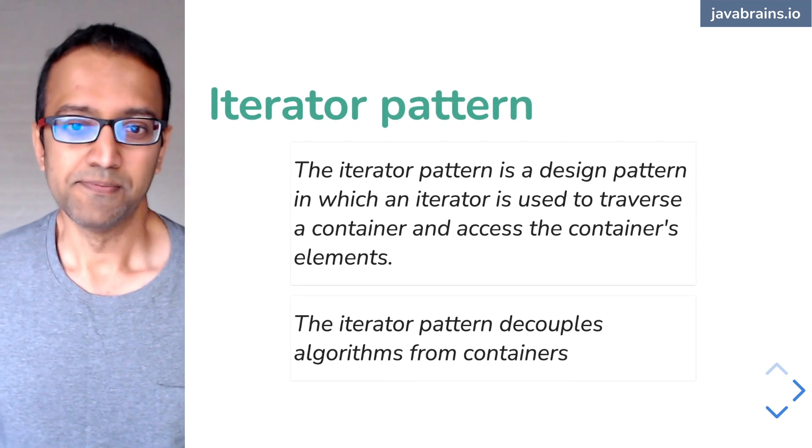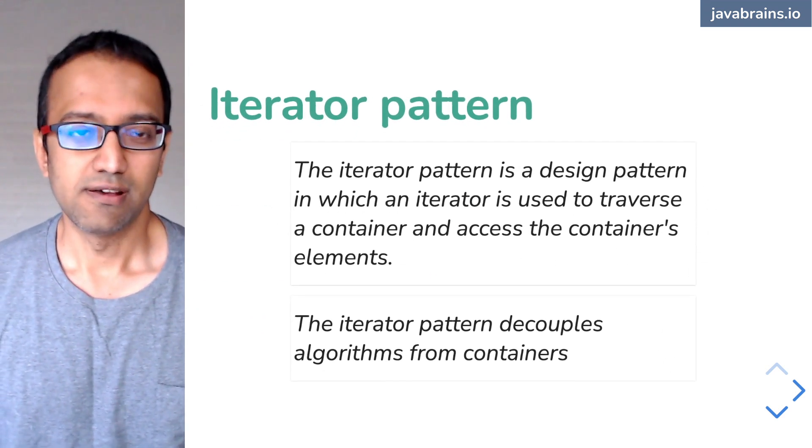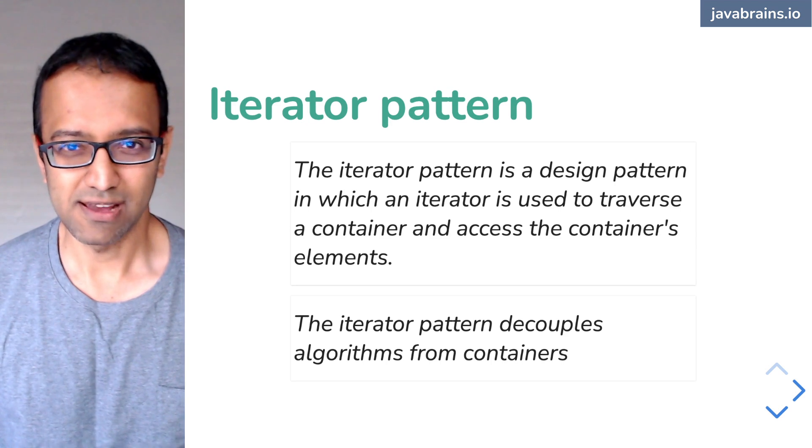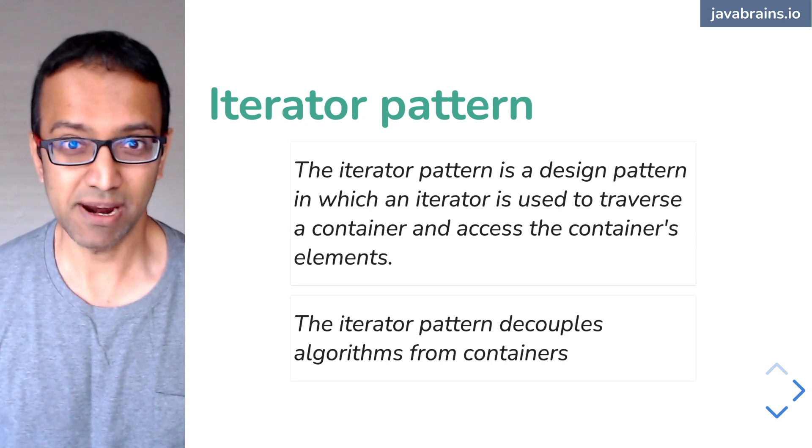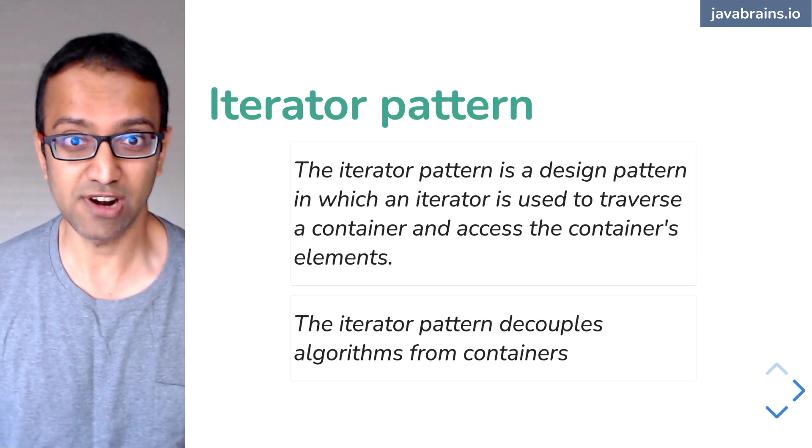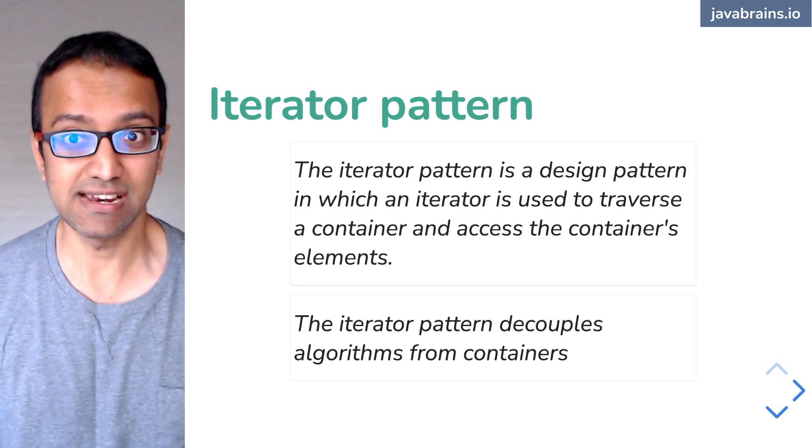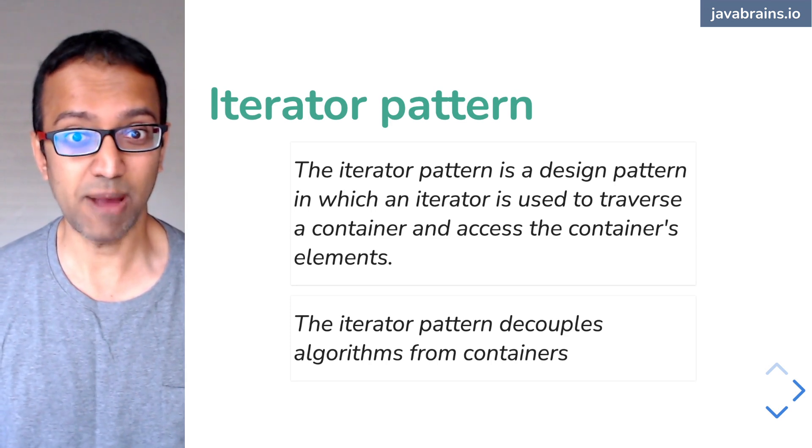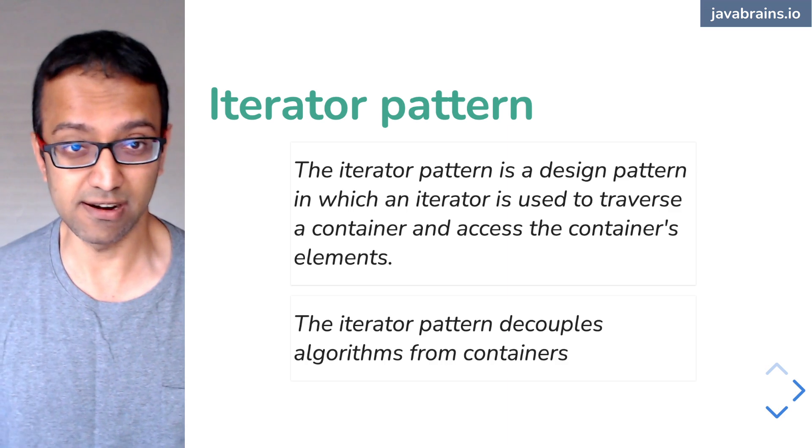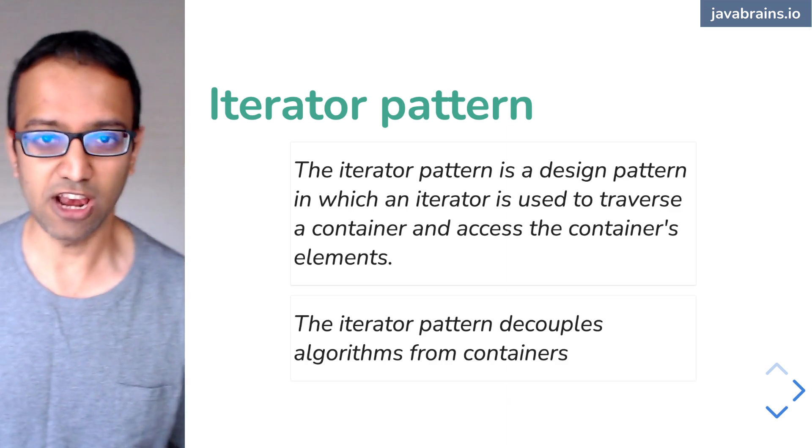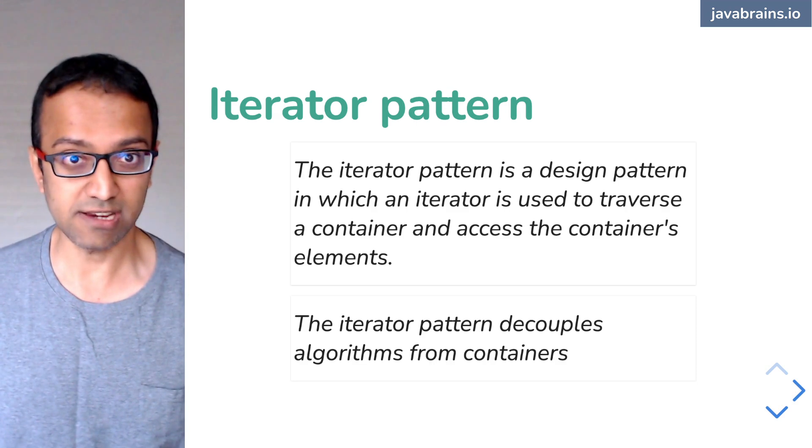The iterator pattern. From the Wikipedia definition: The iterator pattern is a design pattern in which an iterator is used to traverse a container and access the container's elements. The iterator pattern decouples algorithms from the container. We do this with collections a lot. We iterate over collections.